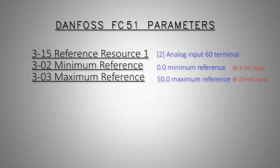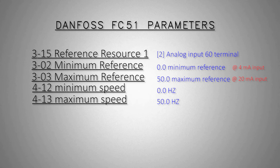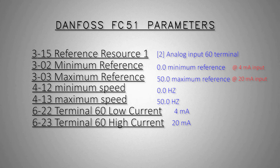Just a side note here: the speed of the motor will not exceed the speed entered in parameter 4-14, which is the maximum speed limit. If we want to run at higher speeds, we have to increase the speed limit in parameter 4-14. Finally, we have to set the minimum and maximum range of the analog input current signal for terminal 60. By default the minimum signal is set to 0 mA — we can change it to 4 mA. The high limit is set to 20 mA, and it is good to go.